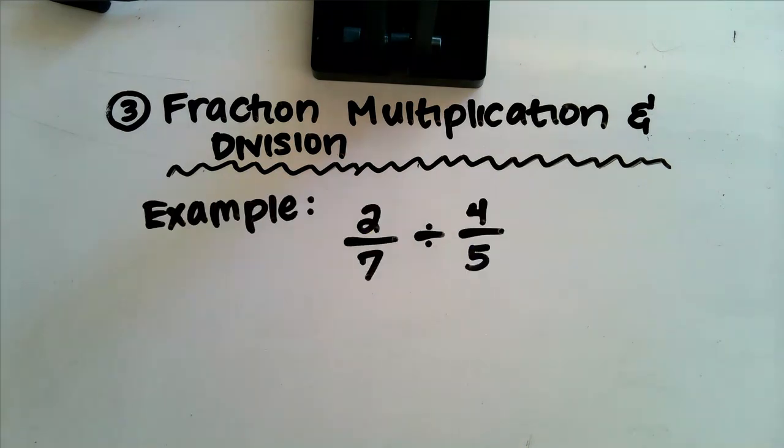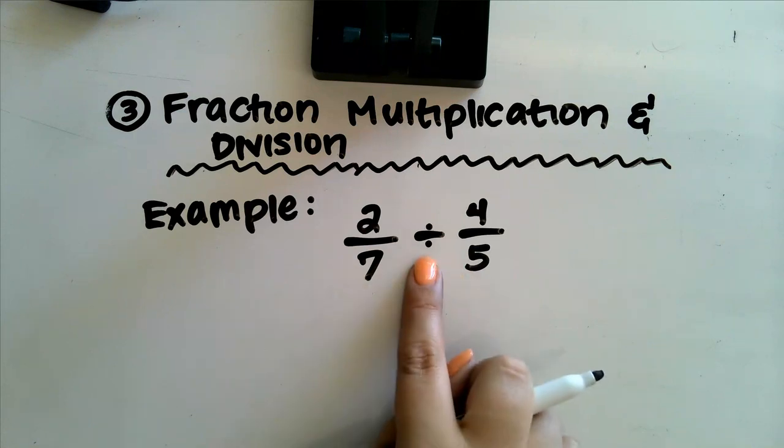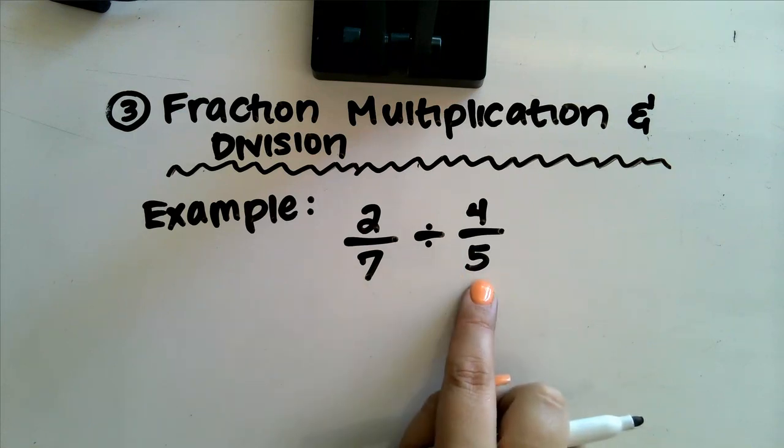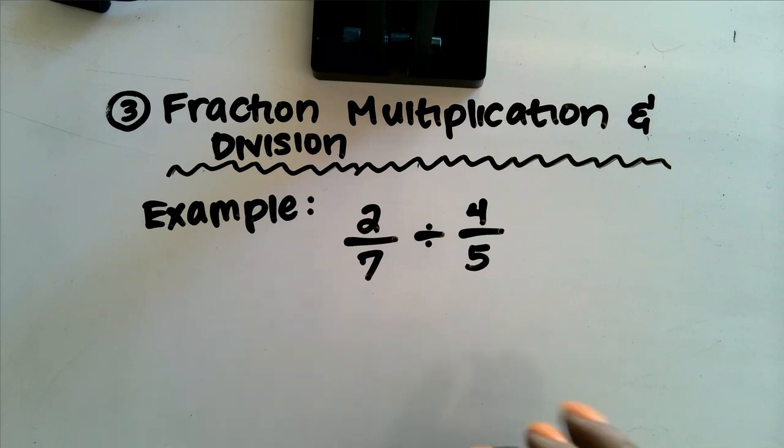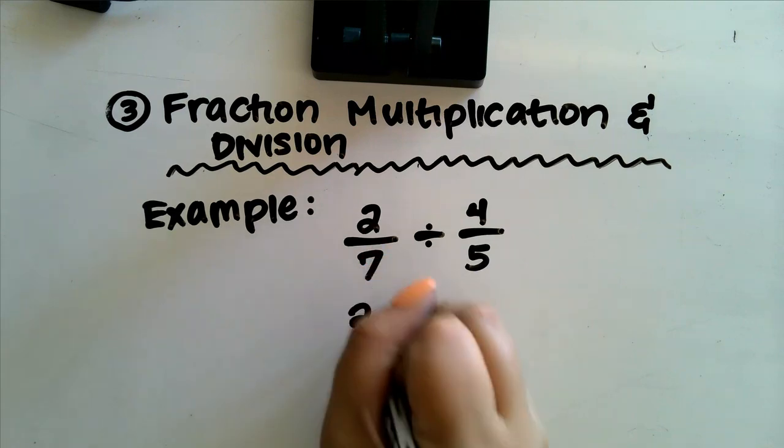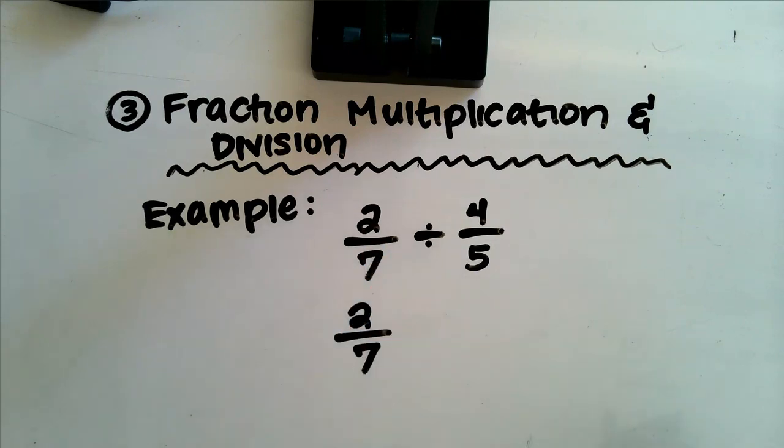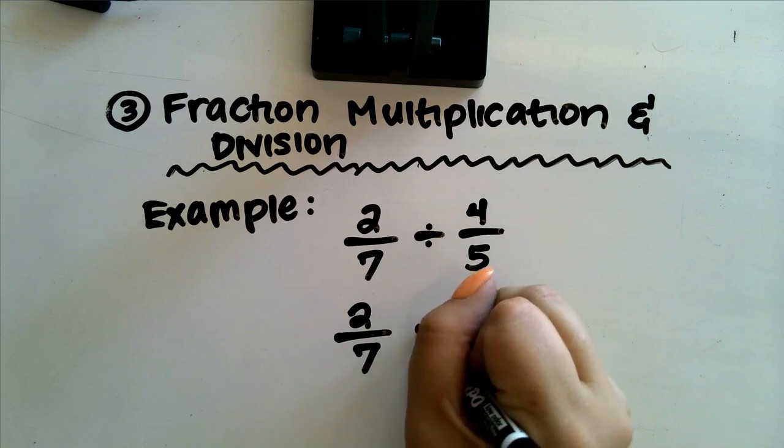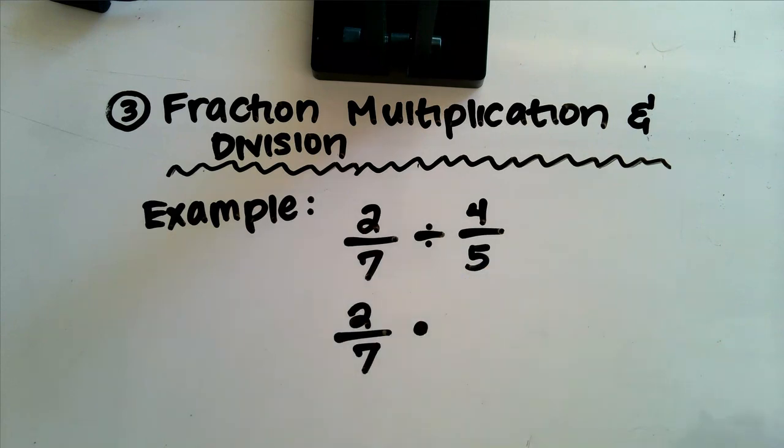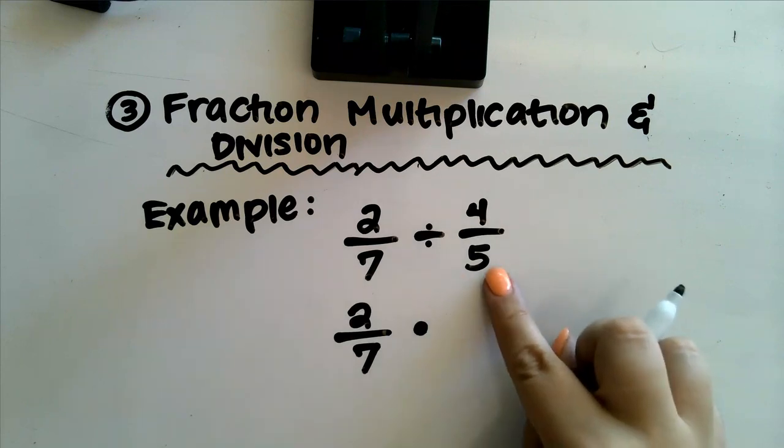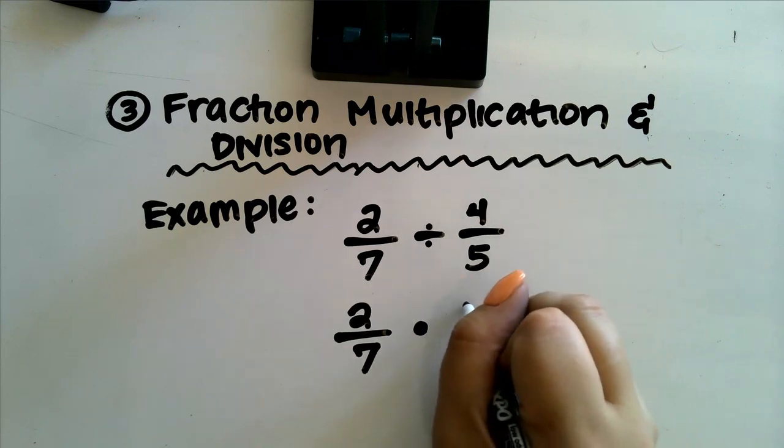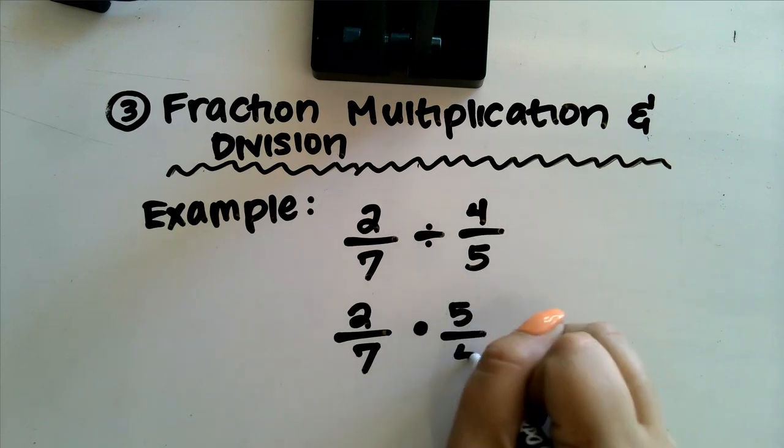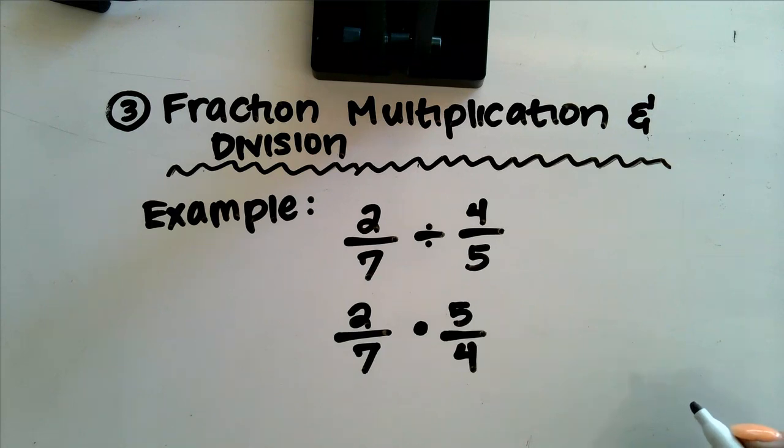Let's jump into our example here. Here we are having a fraction 2 over 7 divided by 4 over 5. So using our keep-change-flip rule, we're going to keep our first fraction, 2 over 7. We're going to change that division sign into a multiplication sign. And then we're going to flip this second fraction here, we're going to flip it over. 4 fifths became 5 fourths.